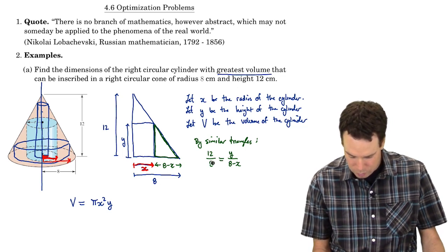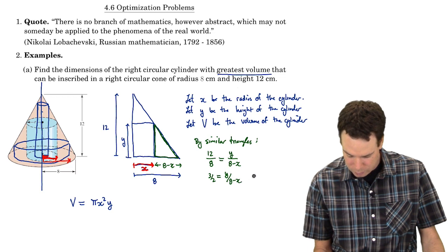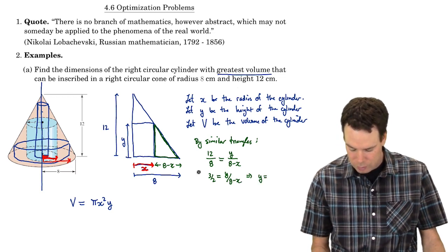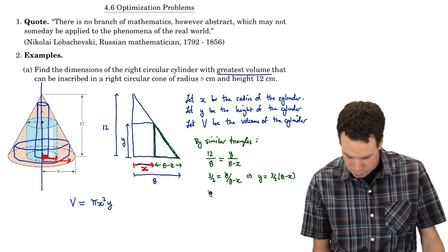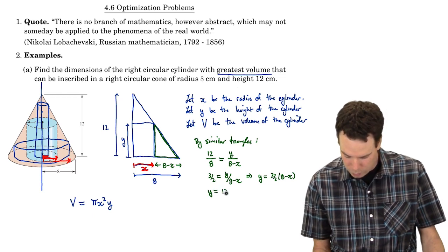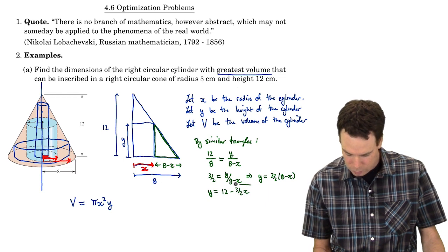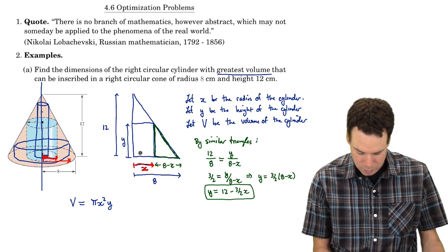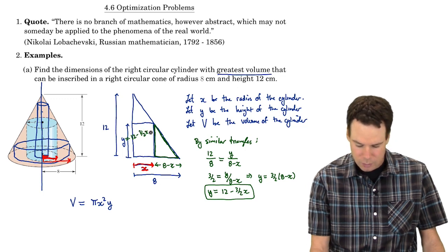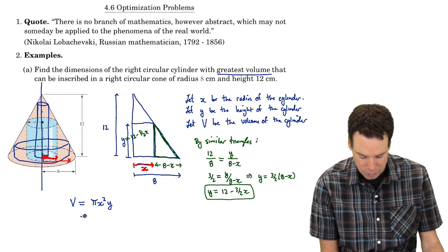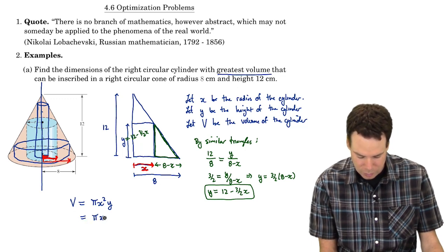Notice that 12/8 reduces to 3/2. So 3/2 = Y/(8 − X). Multiplying both sides by (8 − X), we get Y = (3/2)(8 − X) = 12 − (3/2)X. So Y = 12 − (3/2)X. Now we've got our volume function expressed entirely in terms of X alone: V = π·X²·(12 − (3/2)X).